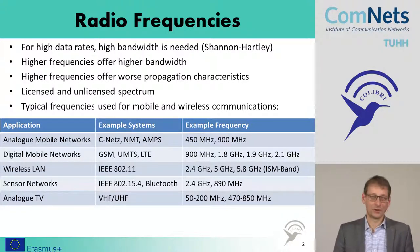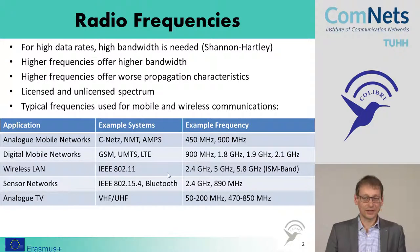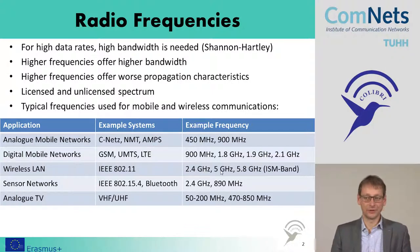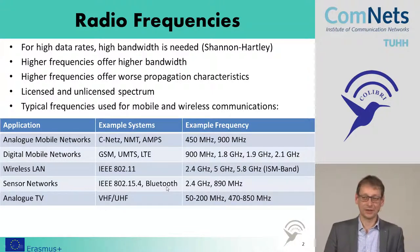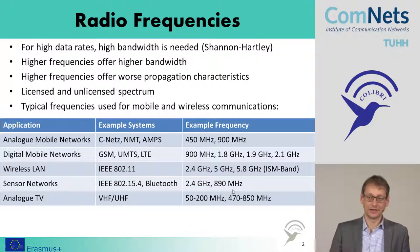Wireless LAN, which you all know from home, follows the IEEE 802.11 standard. We use the unlicensed ISM — industrial, scientific, and medical — spectrum at 2.4 GHz or 5 GHz, sometimes 5.8 GHz as well. For sensor networks, we again have rather low data rates and sometimes difficult environments, with two unlicensed frequency bands available: 868 MHz and 2.4 GHz.